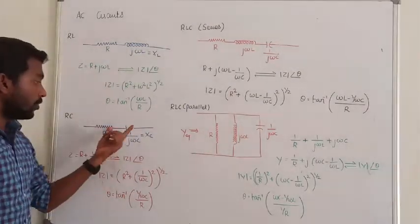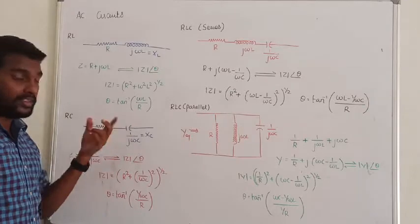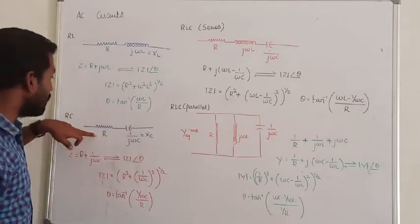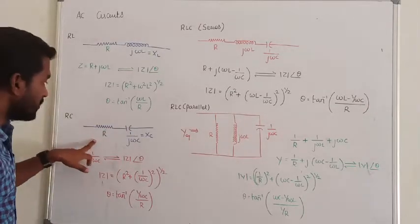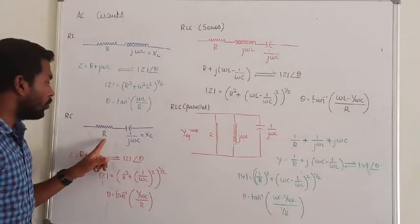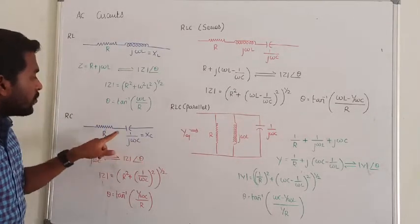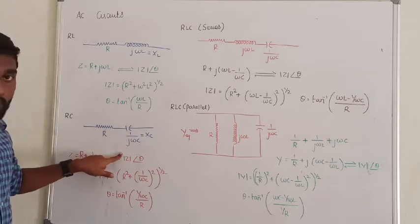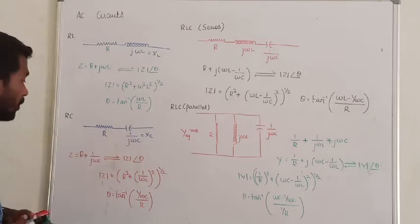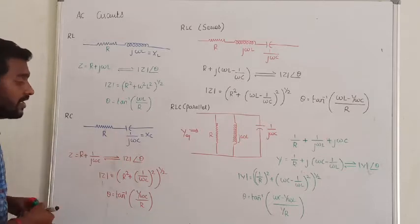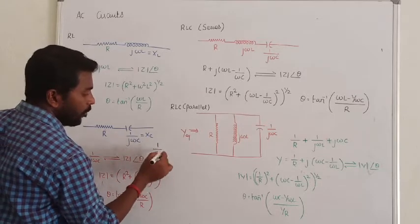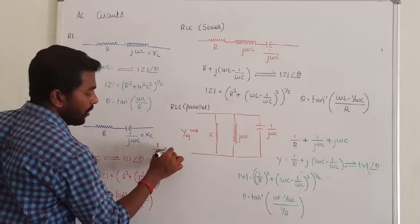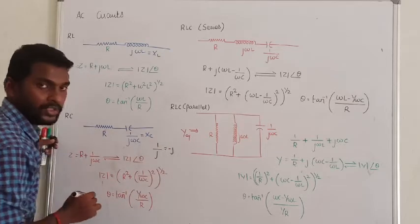RC circuit. There are two elements: the capacitor and the resistor, both connected in series. The total impedance is R plus 1/jωC. Now, simplifying 1/j: multiply top and bottom by j.